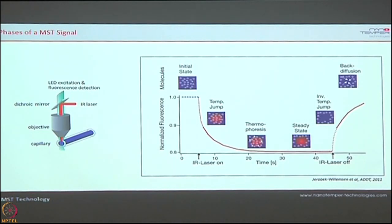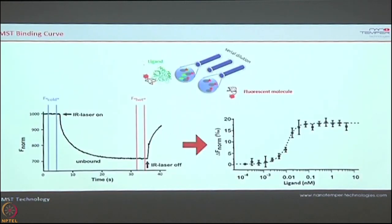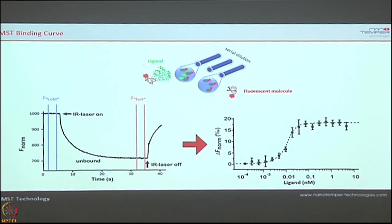I have a sample where one binding partner and a ligand at different concentrations are mixed, each taken in a small glass capillary. On every glass capillary I take this thermophoresis reading: first 5 seconds uniform distribution, then laser on till 30 seconds for steady state, then laser off. In this way I collect the thermophoresis signal for all different dilutions.